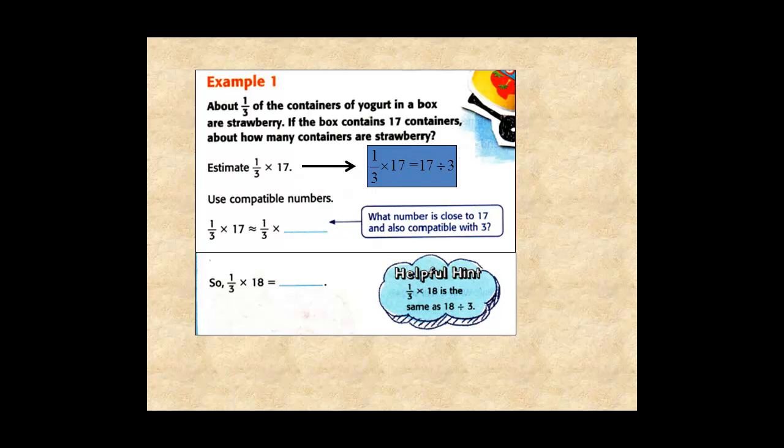So, we need to think of a compatible number - a number close to 17 that is divisible by 3. You might think of 15, but 18 would be better. Then, 1/3 of 18 is 6. So, 1/3 × 17 is approximately equal to 6.